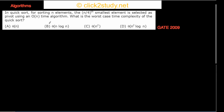We come to the next problem. It says: in quicksort for sorting n elements, the n/4 smallest element is selected as pivot using an O(n) time algorithm. What is the worst case time complexity of the quicksort?